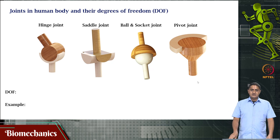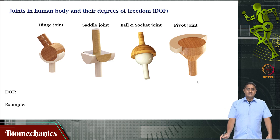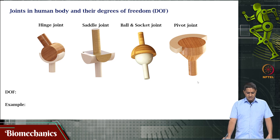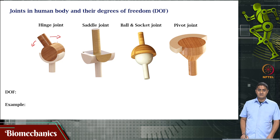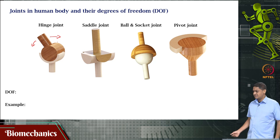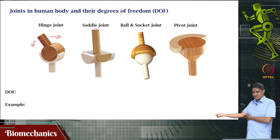One type of joint in the human body that is easy to observe is the hinge joint. This joint can rotate either in this direction or in that direction — that is, it has a single degree of freedom. For example, the elbow joint: this flexion and extension of the forearm happens, so single degree of freedom.